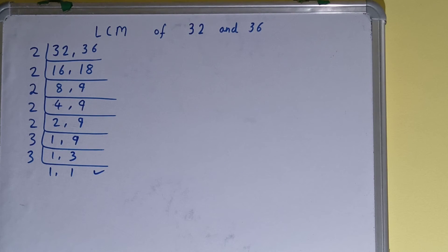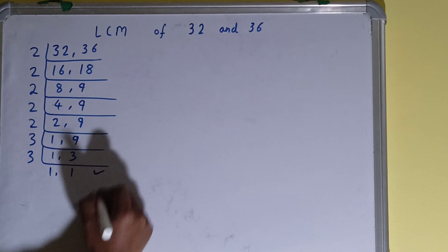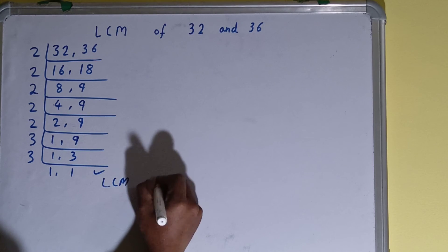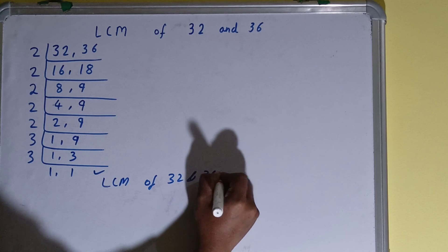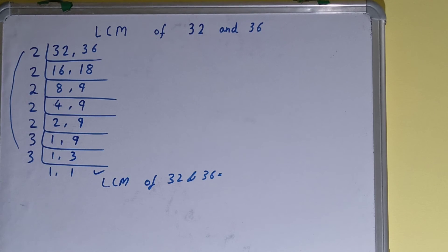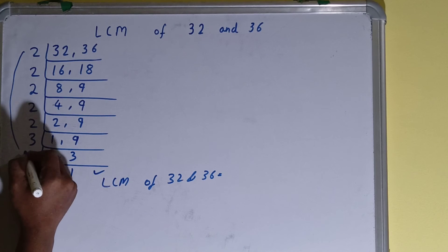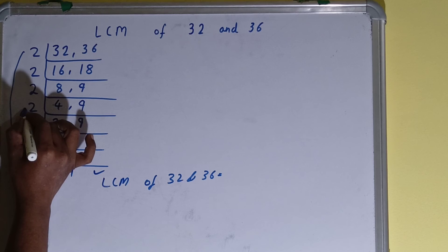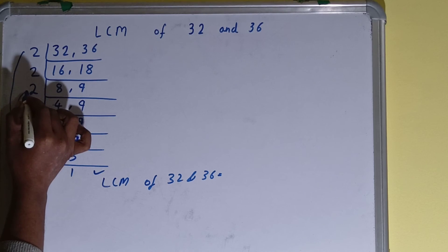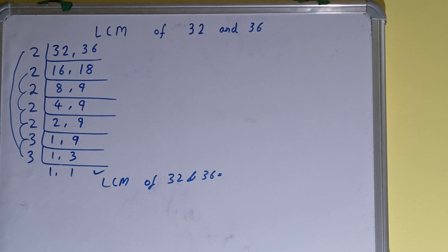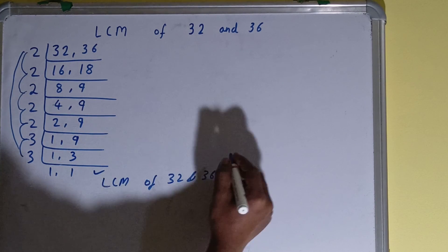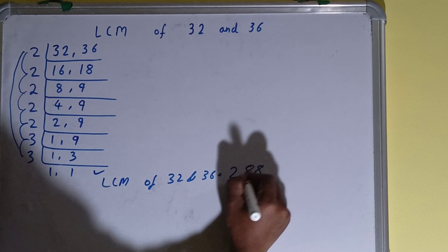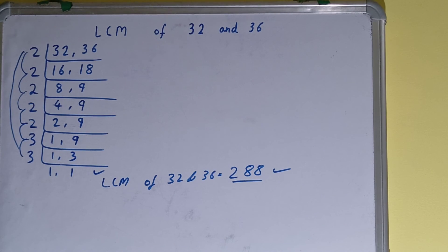Once we get 1 and 1, we stop and do the last step: the LCM of 32 and 36 is equal to the product of all the divisors on the left-hand side. Multiplying 2 × 2 × 2 × 2 × 2 × 3 × 3 gives us 288. So the LCM of 32 and 36 is 288.